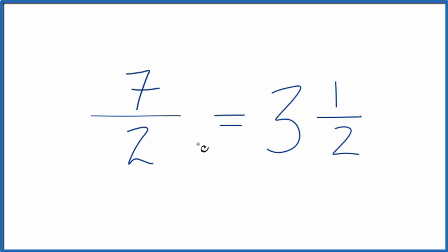This is Dr. B simplifying the fraction 7 over 2. It's already simplified, but you could write it as a mixed number.